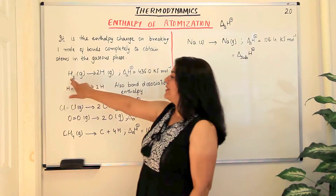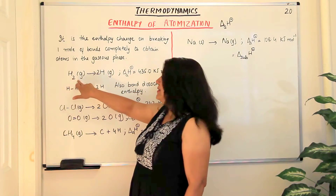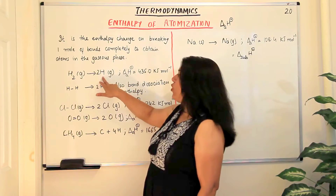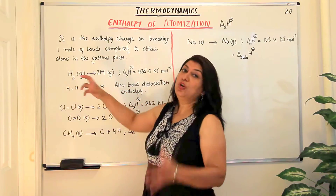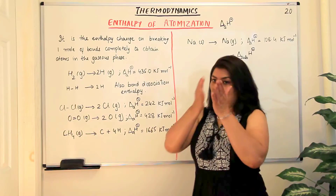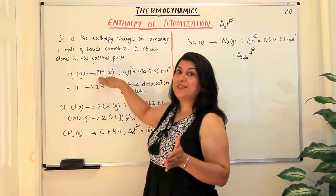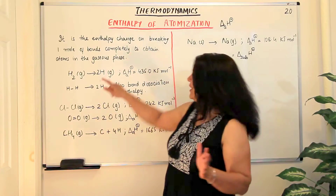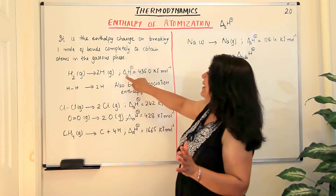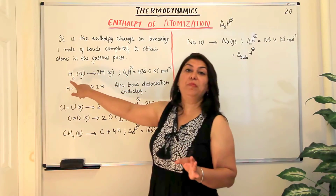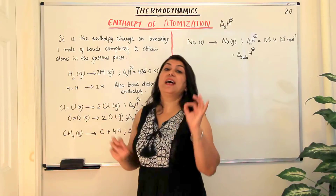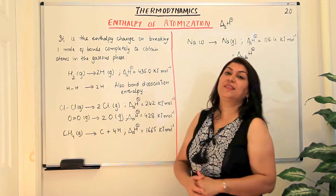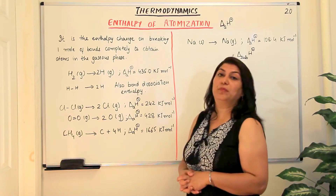For example, H₂ molecule in the gaseous state gives us two hydrogen atoms — so we've got atoms from a molecule, this is atomization. In this atomization process, the bonds are breaking. The enthalpy of atomization of one mole of hydrogen molecule to give two moles of hydrogen atoms is 435 kilojoules per mole.